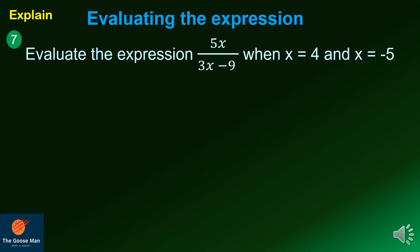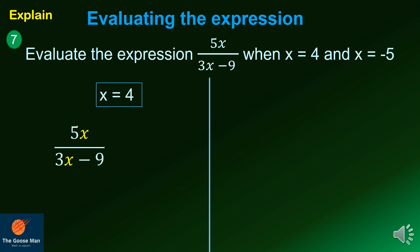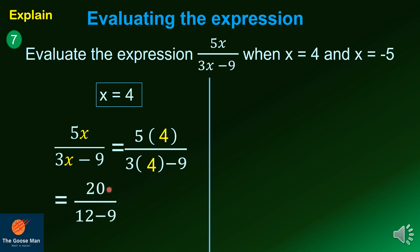Let's try more examples. Evaluate 5x all over 3x minus 9 when x equals 4. Let x equal 4 in the expression 5x all over 3x minus 9. Since 5 times 4 equals 20 and 3 times 4 equals 12, we get 20 all over 12 minus 9, which simplifies to 20 over 3.